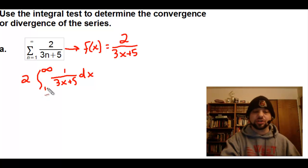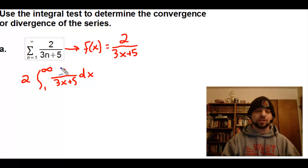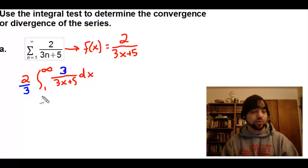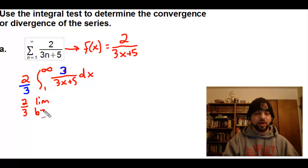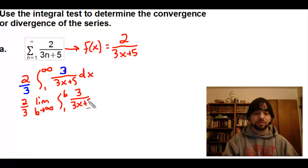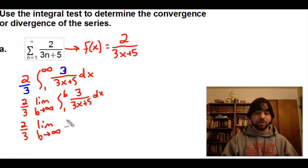I could do a u-substitution, or you can tell that if the bottom is 3x plus 5, I'm going to want the derivative of that up in the numerator. So I will put a 3 up here and balance that with a 3 on the outside. Everything is still equal to the original problem, but now I can integrate this. I do have an issue with the infinity, so I'll go ahead and use a limiting agent, going from 1 to b of 3 over 3x plus 5 dx. Now I can go ahead and integrate it. The result of this integration is the natural log of the absolute value of 3x plus 5, integrated from 1 to b.